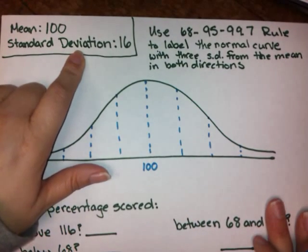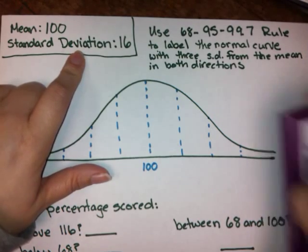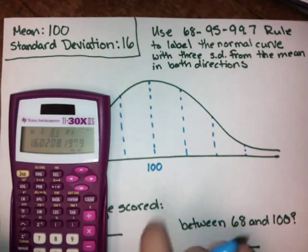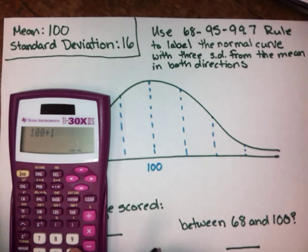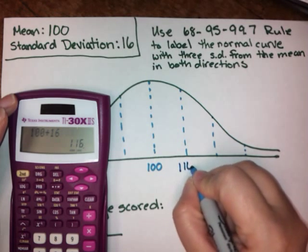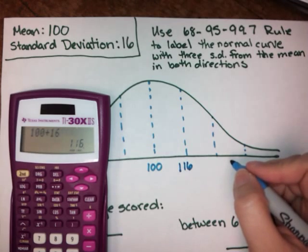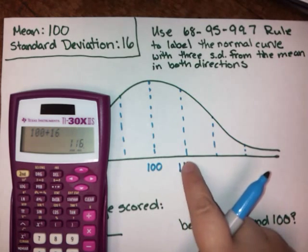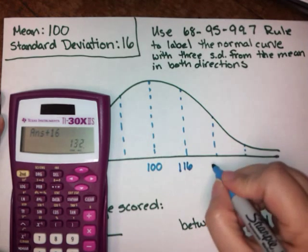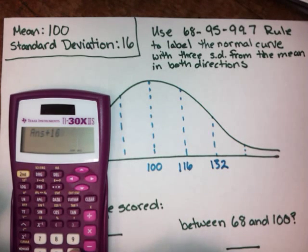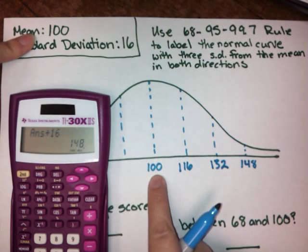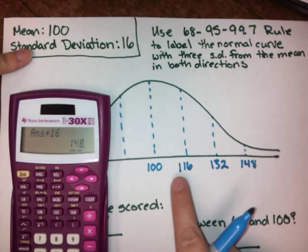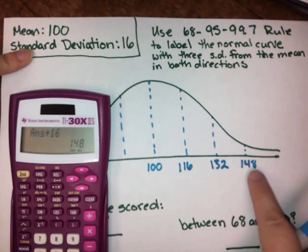Since the standard deviation is 16, we use our calculator and start adding. The mean is 100. The first standard deviation above the mean is 100 plus 16, which is 116. For the second standard deviation, we add another 16, giving us 132. Plus 16 again gives us 148. So the standard deviations above the mean of 100 are 116, 132, and 148 — just moving in increments of 16.